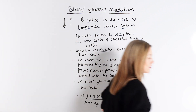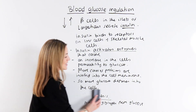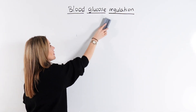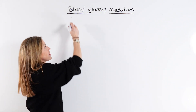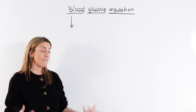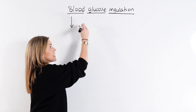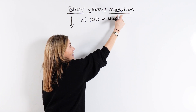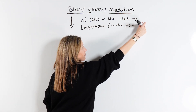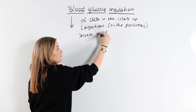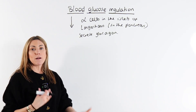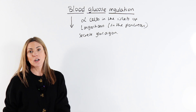Now let's talk about glucagon — the flip side of the story. If your blood glucose level falls below normal — say you've been exercising and using up a lot of glucose in respiration, or you've been fasting — this time it's the alpha cells in the islets of Langerhans in the pancreas. They're going to secrete glucagon from that endocrine tissue, the islets of Langerhans, but specifically the alpha cells.